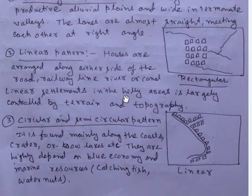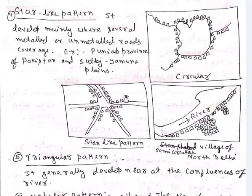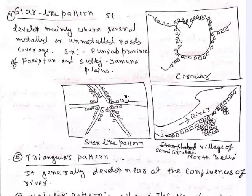The star-like pattern develops mainly where several metalled and unmetalled roads converge. You can see this pattern particularly in Punjab and in the Sutlej plains.